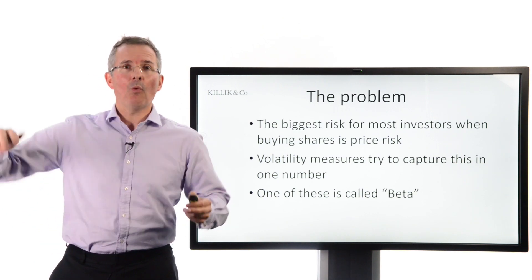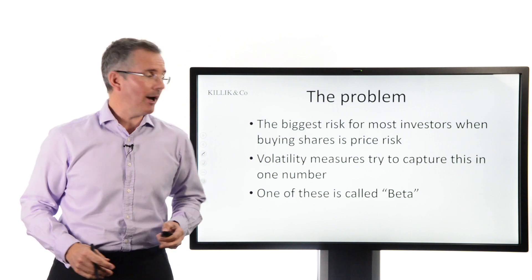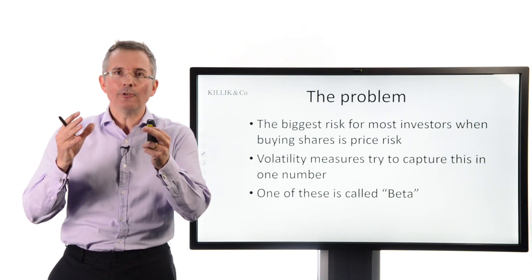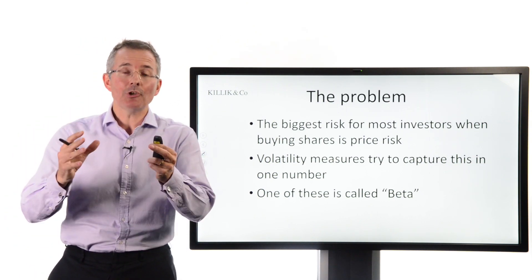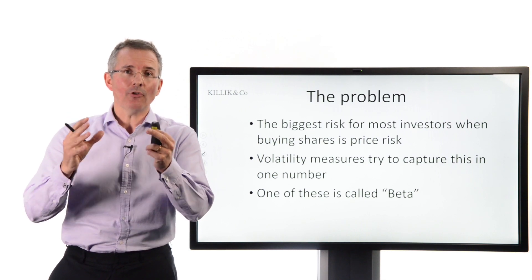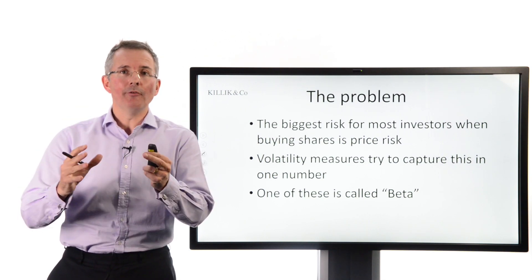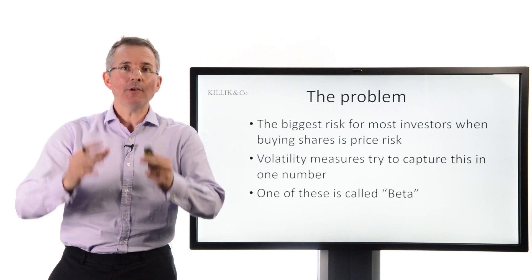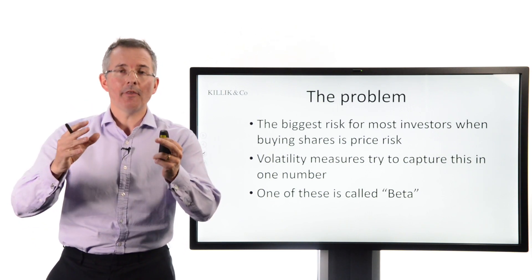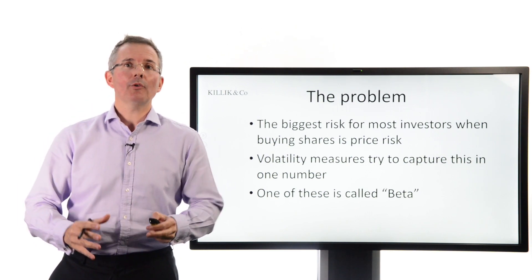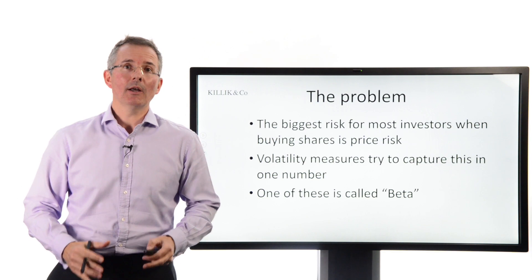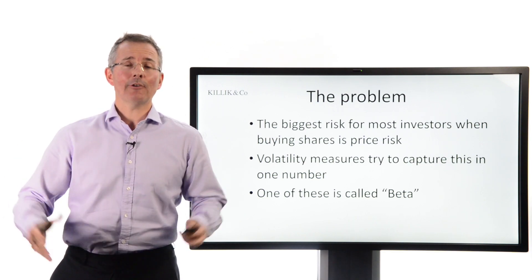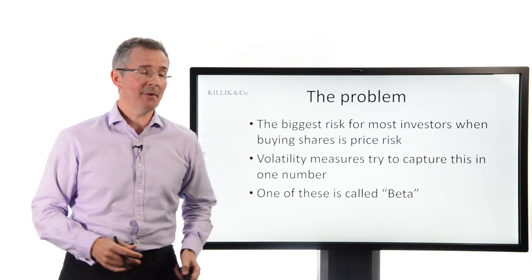Beta focuses solely on volatility — the wobbliness of the share price. What beta tries to do is capture the extent to which a share moves against a chosen benchmark. Does it go with the benchmark? Does it go further than the benchmark? Or does it underperform the benchmark? That's what beta's all about.